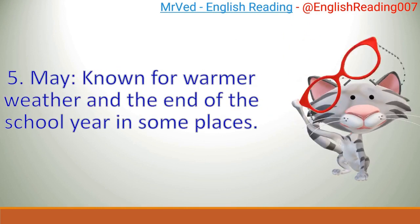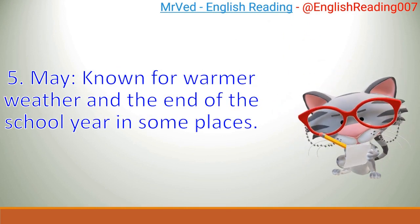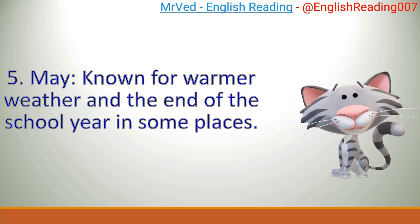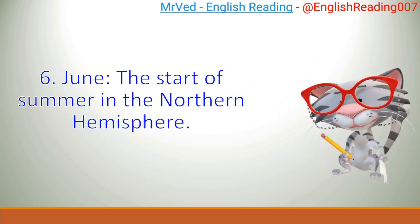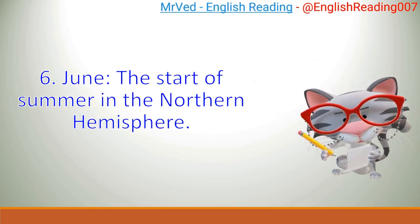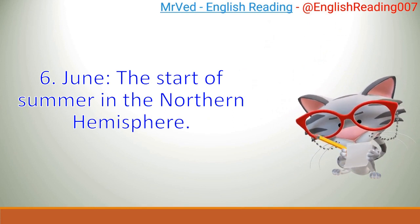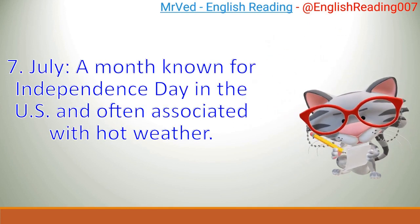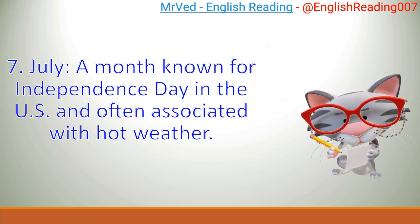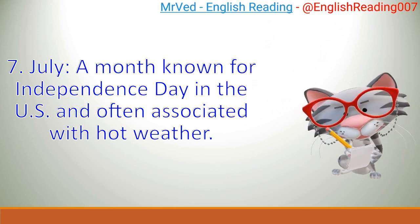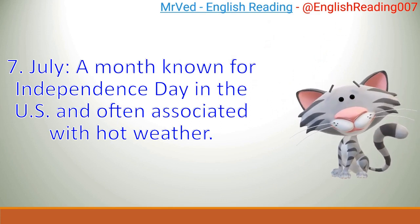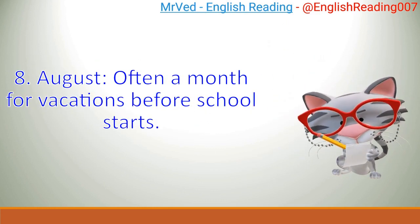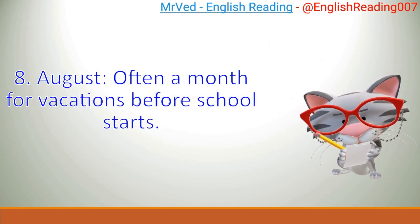5. May, known for warmer weather and the end of the school year in some places. 6. June, the start of summer in the Northern Hemisphere. 7. July, a month known for Independence Day in the U.S. and often associated with hot weather. 8. August, often a month for vacations before school starts.